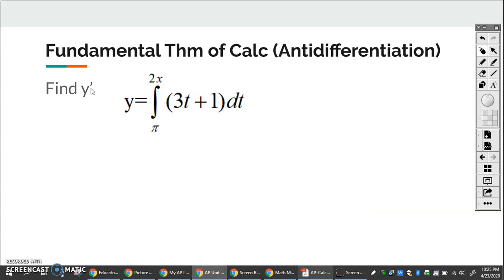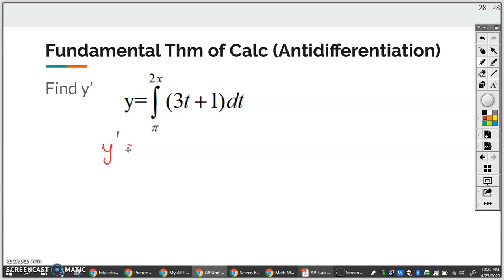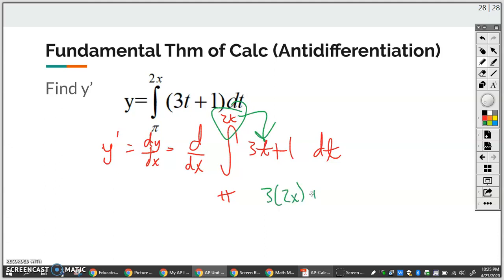So for example, here, if I want to find Y prime, I would take the derivative of Y. So Y prime, which is the same as DY DX, would be the derivative with respect to X of this integral. Constant, this variable matches, so I can just plug in 2X. So it would be 3 times 2X plus 1. But now I have to multiply this whole thing times the derivative of 2X, which is 2. Then you can stop right here, put a box around it. Don't go any further.